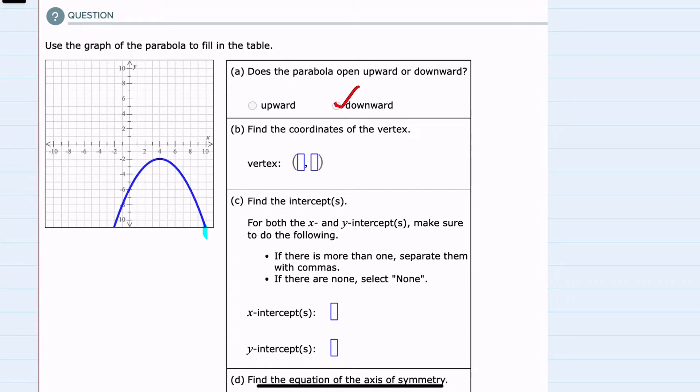Then we're asked to find the coordinates of the vertex. The vertex is the point at which it changes direction. That would be this point here. The x-value is 4 and the y-value is -2, so (4, -2) is the vertex.